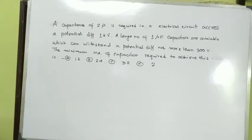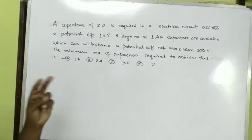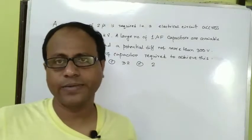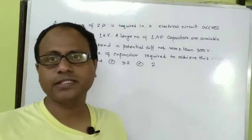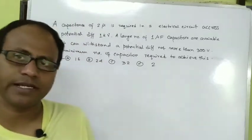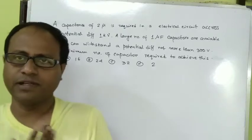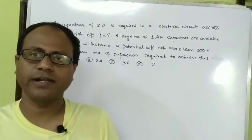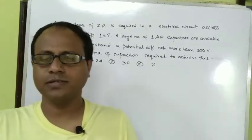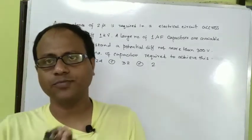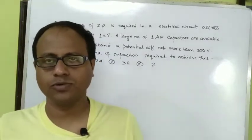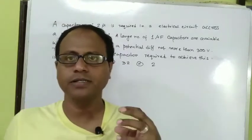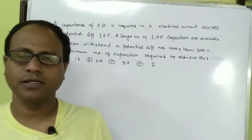We need to get a total capacitance of two microfarad. The total capacitance across the circuit must be two microfarad. We have one microfarad capacitors available. Each capacitor can withstand only 300 volts.